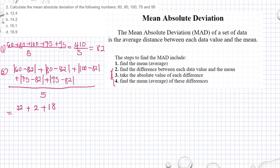Then we have 18. Plus 75 minus 82 is 7. Plus 95 minus 82 is 13, divided by 5. Then we have 22 plus 2 plus 18.